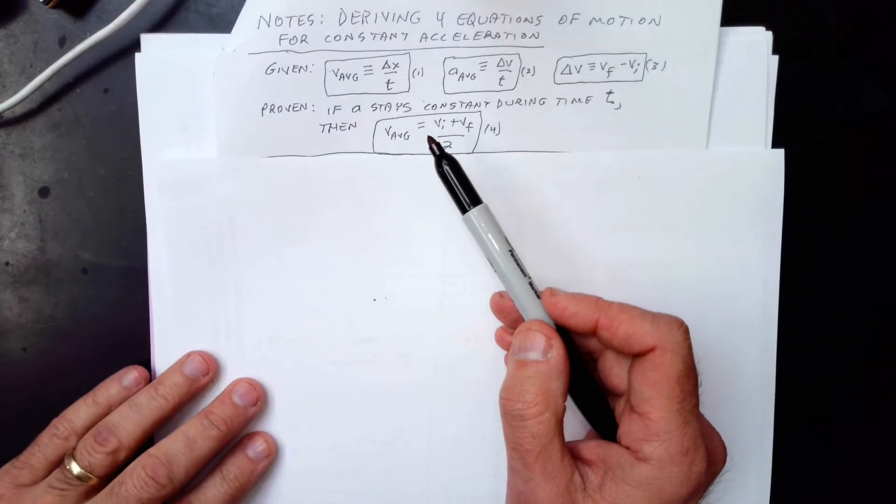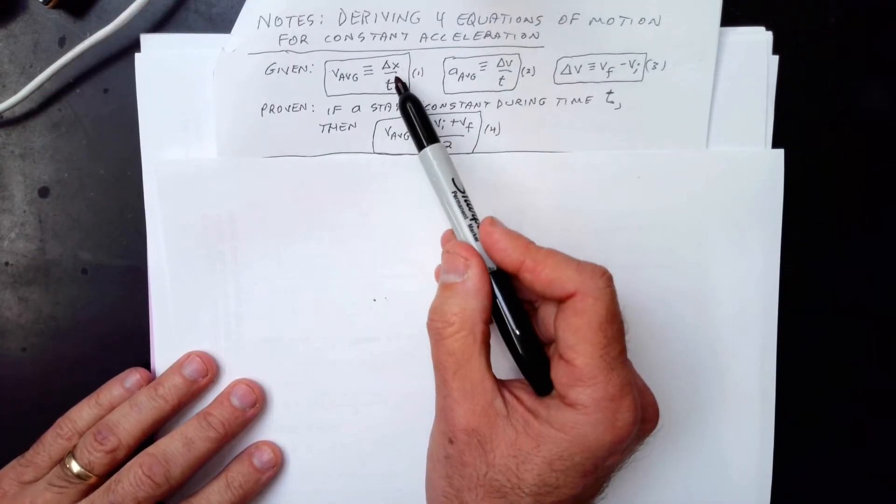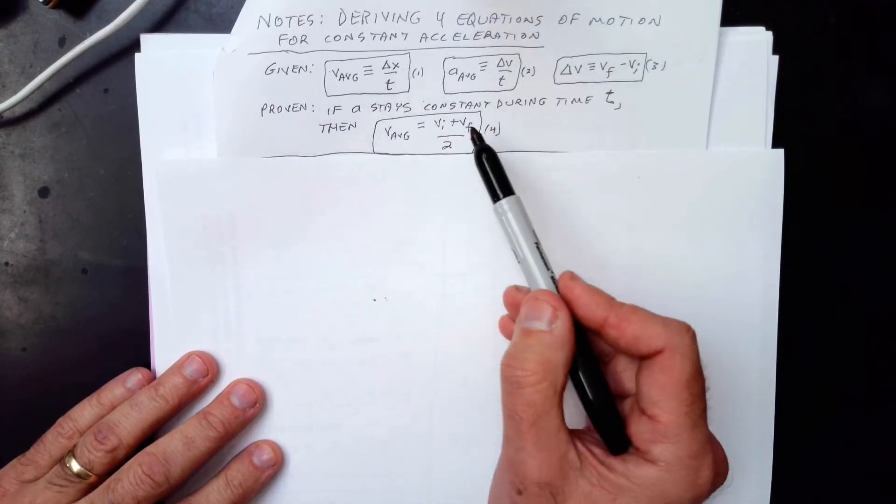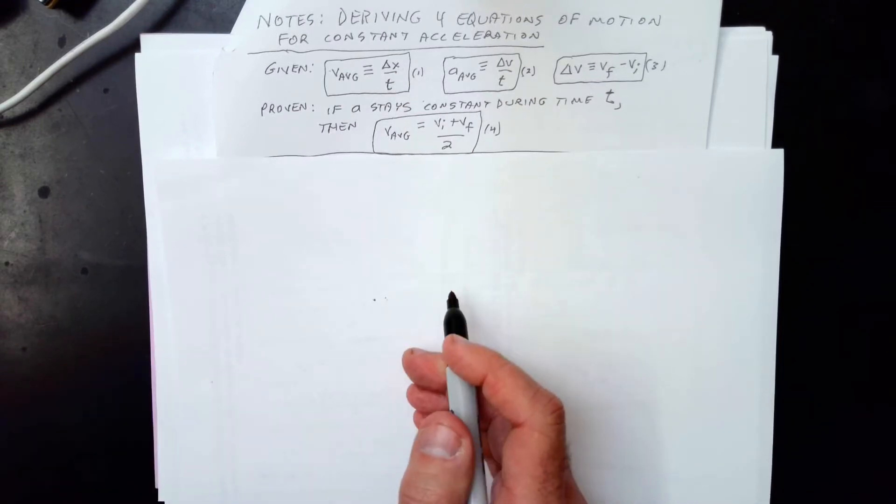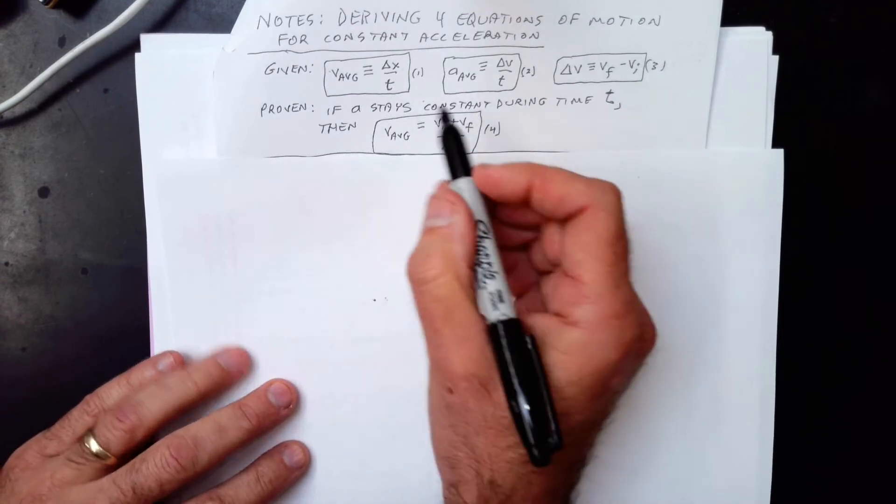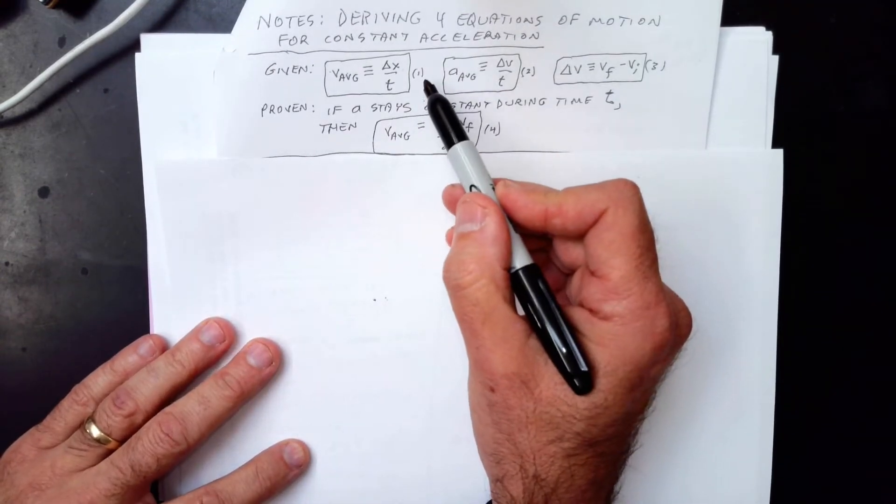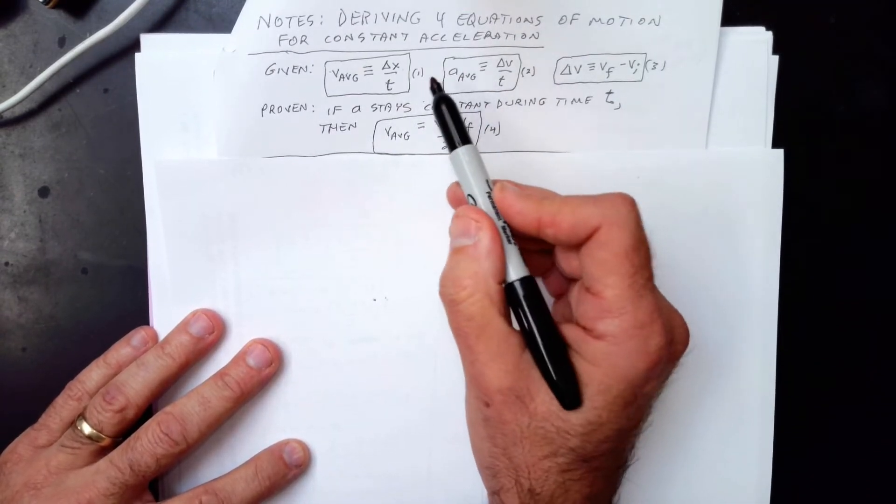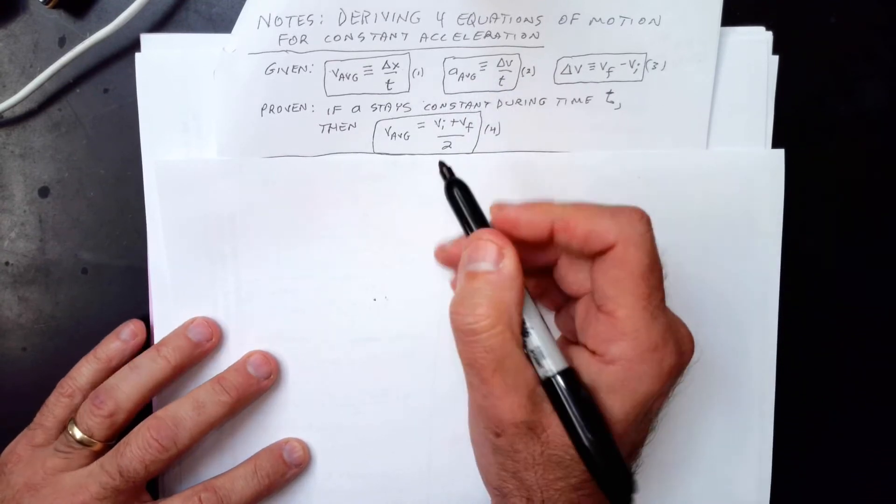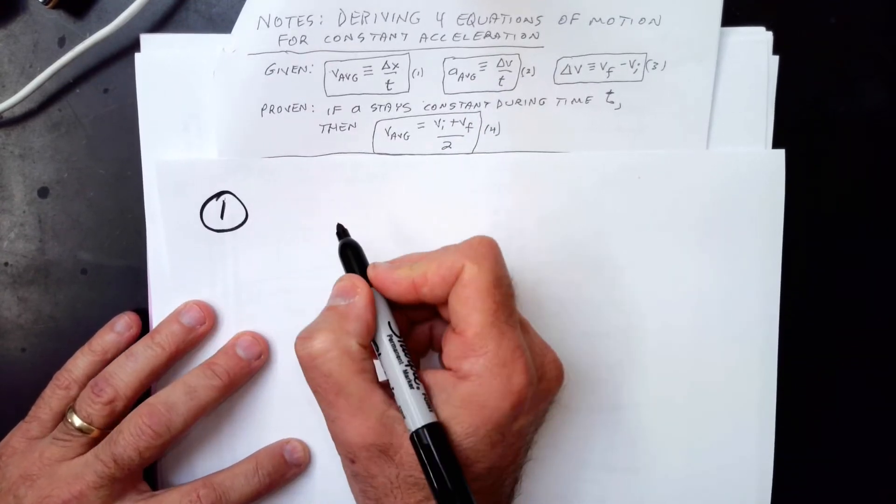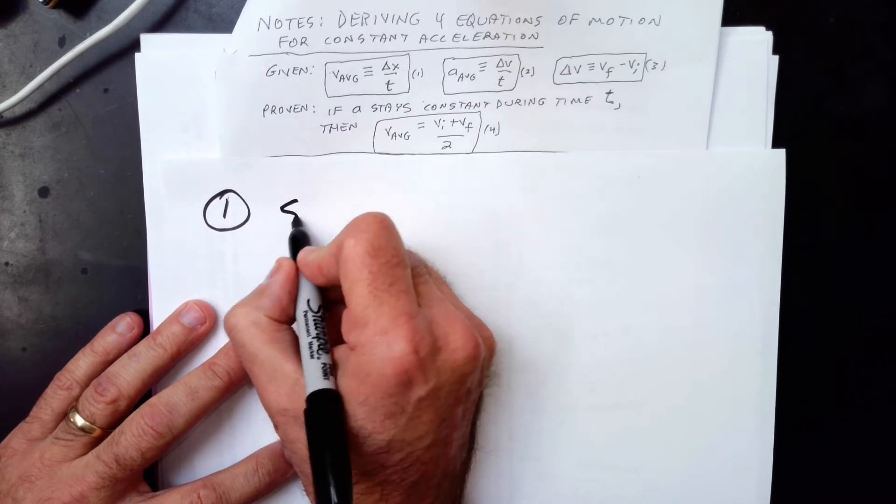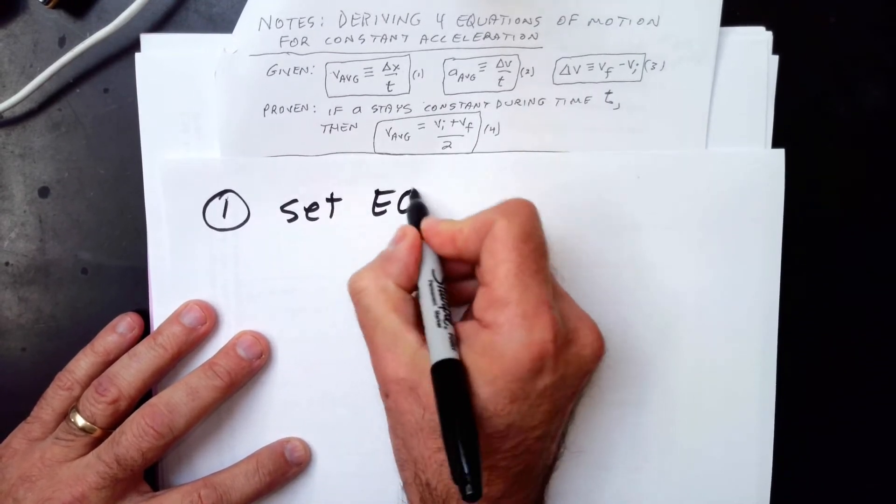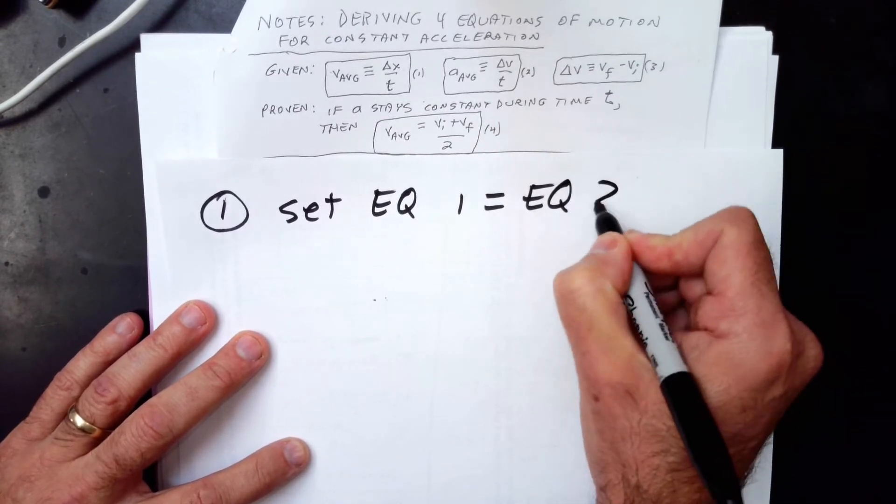And we're going to use substitution, or maybe an easier way to think of this first one is, since this on the right equals the average, and that on the right equals the average, then these two must be equal to each other. So for this, I can just say, and see I've numbered, this is the way people do proofs, they number each equation. So this is called equation one, that's called equation two. So I can just write to solve for the first equation.